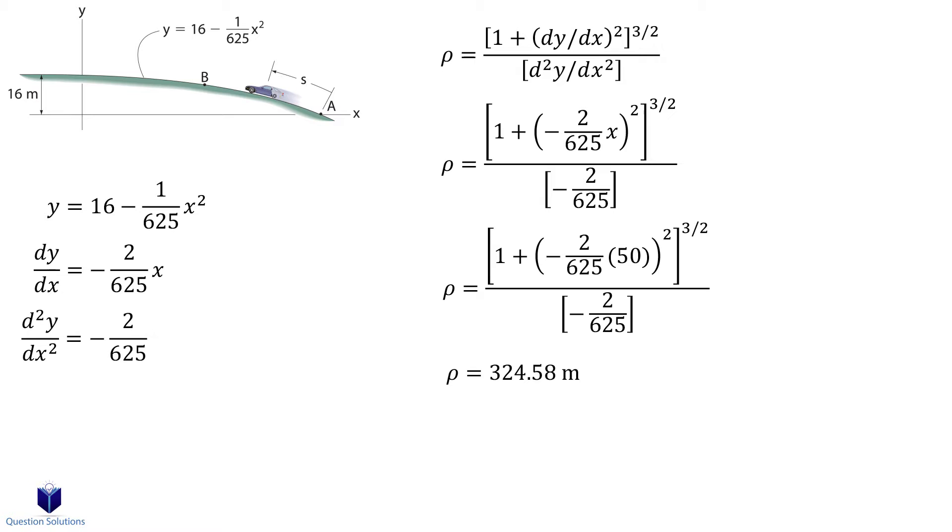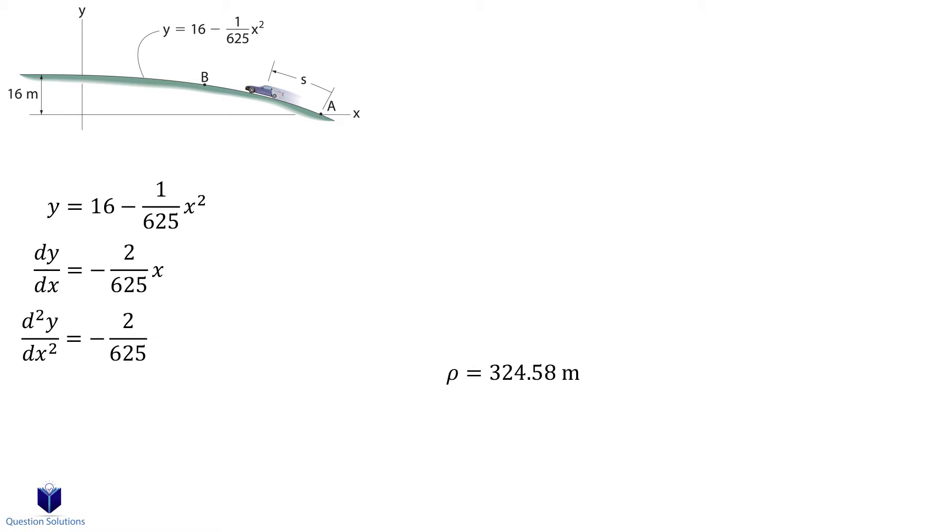Now we need to figure out the velocity of the car at point B. To do that, we need to use the equation given to us in the question and substitute the s value.